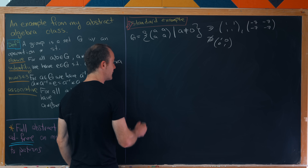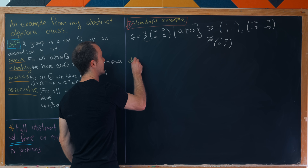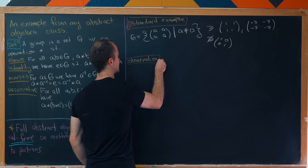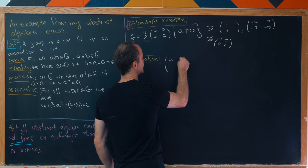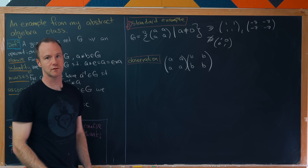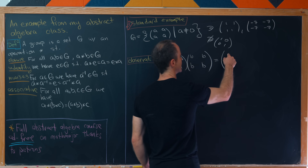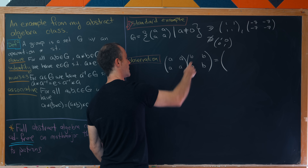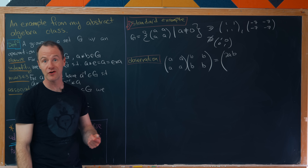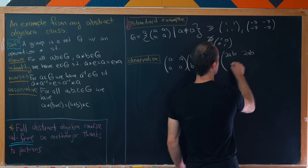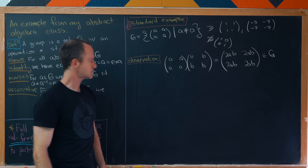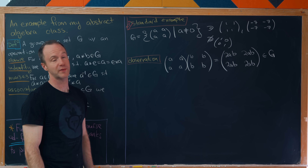Everything can be figured out by looking at what it looks like to combine elements from this set. Let's take two elements and multiply them: [a,a;a,a] times [b,b;b,b]. Using the standard rules for matrix multiplication, the upper-left entry is ab + ab = 2ab, and continuing we get 2ab in every entry. So the product is [2ab, 2ab; 2ab, 2ab], which is clearly inside the group. This confirms closure, and it also gives us an idea for guessing what the identity element is.